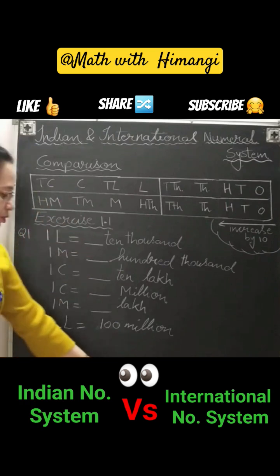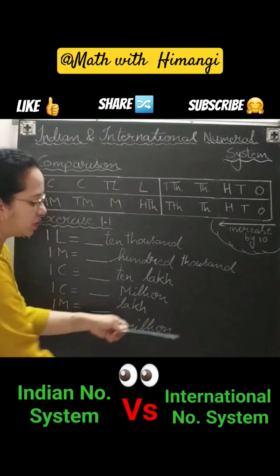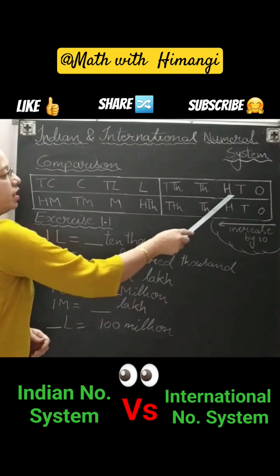So this is the first one, our Indian number system. In Indian number system we have the places: ones, tens, hundred, thousand, ten thousand, lakh, ten lakh, crore.